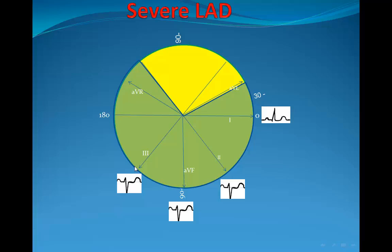In the normal ECG sequence we see leads II, III, then AVF. But regarding the electrical axis in left axis deviation, it starts with lead III becoming negative, then AVF, and with severe left axis deviation, lead II is also affected.